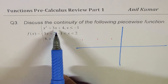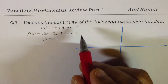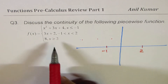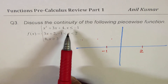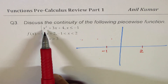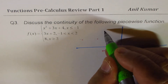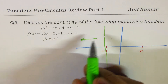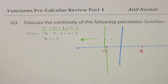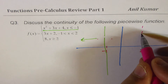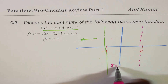At x = -1 there is a break, and at x = 2 there is another break. From minus infinity to -1, the function is the parabola x² + 3x + 4. In the middle part from -1 to 2, we have the linear function 3x + 2.